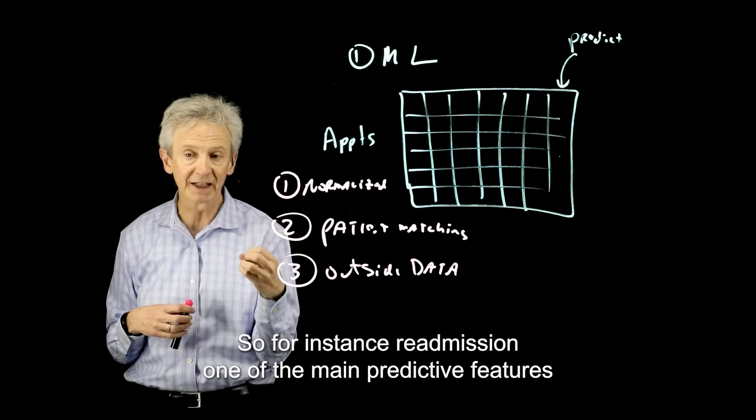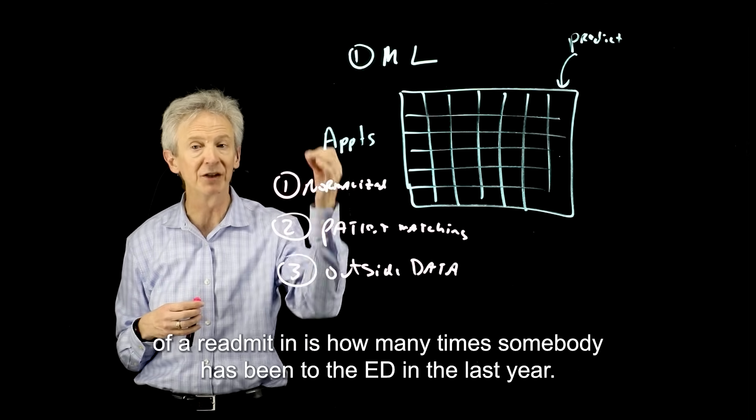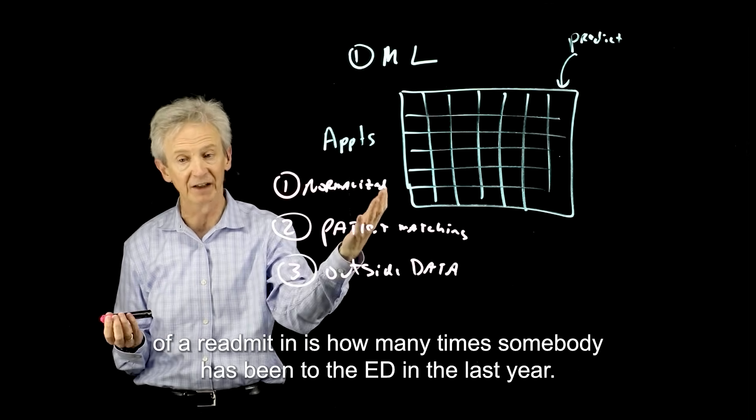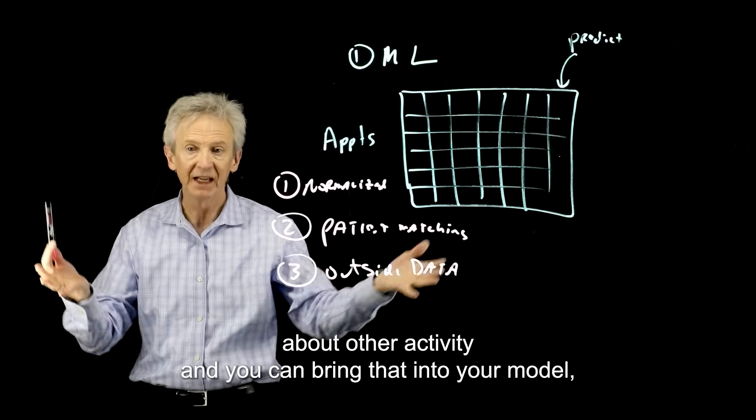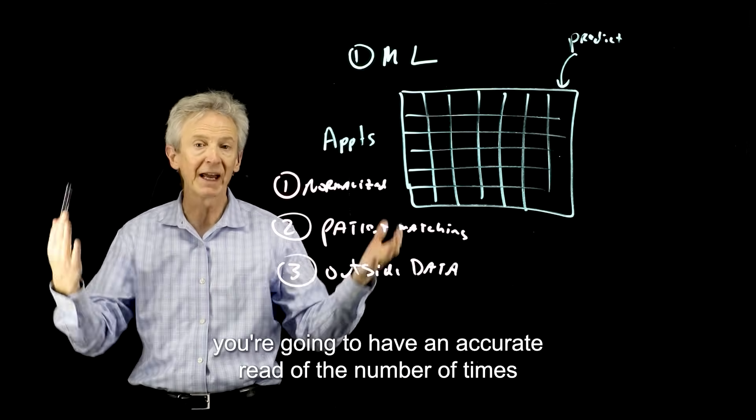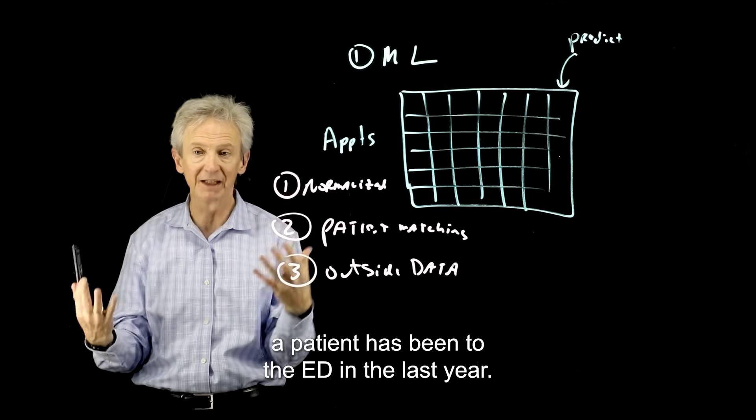One of the main predictive features of a readmission is how many times somebody has been to the ED in the last year. Well, if you know about other activity and you can bring that into your model, you're going to have an accurate read.